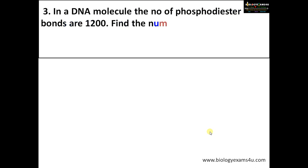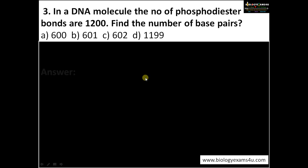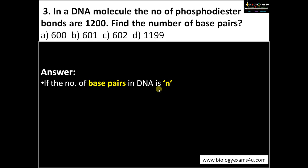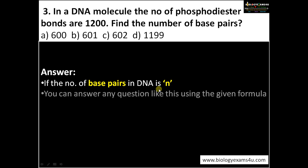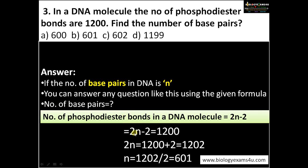One more question in a different format: in a DNA molecule, the number of phosphodiester bonds is 1200 — find the number of base pairs. The options are 600, 601, 602, and 1199. Using the same equation, 2n minus 2 equals 1200. Therefore 2n equals 1200 plus 2, which is 1202. So n equals 1202 divided by 2, giving 601. The correct answer is 601.